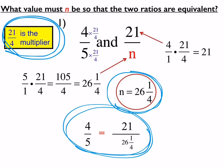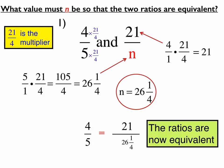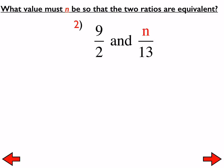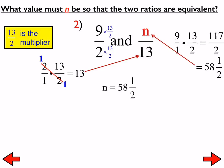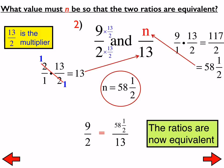I'd like you to work on numbers 2, 3, and 4 with your shoulder partner — the multiplier, the value of N, and what the proportion is. For number 2, we're looking for the multiplier that turns 2 into 13, and that is 13 halves. We also multiply 9 by 13 halves, which gives us 117 halves, or 58 and a half. So that is N, and our proportion is written — the ratios are equivalent, so we have created a proportion.